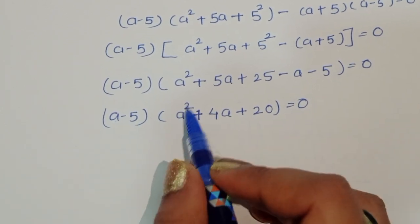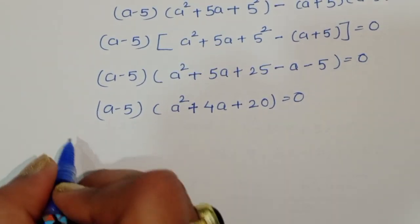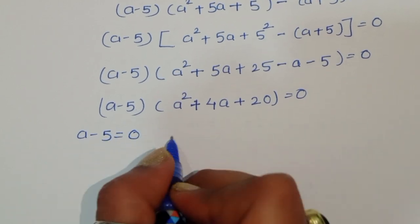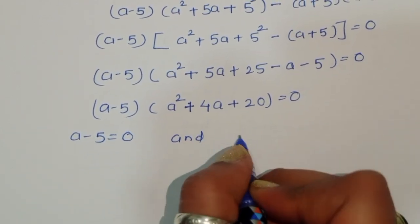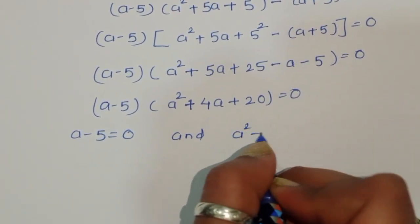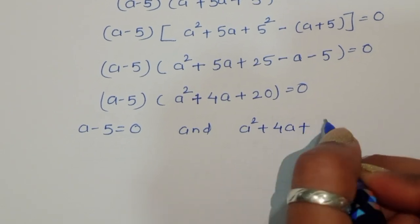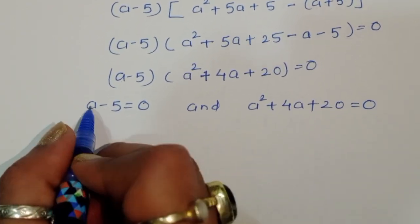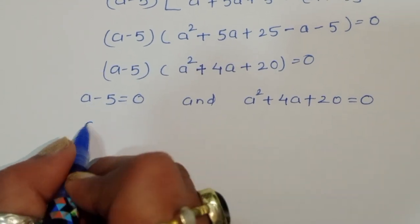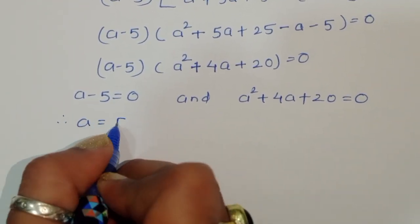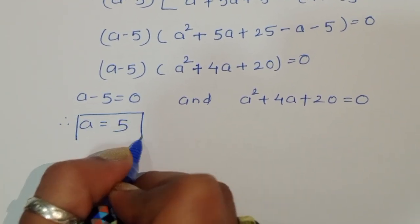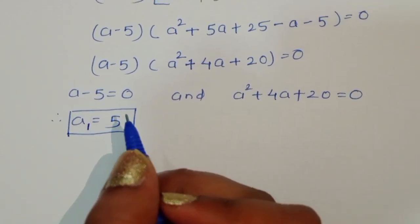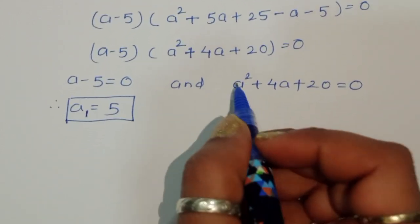We now have two equations: a minus 5 equals 0, and a square plus 4a plus 20 equals 0. From the first equation, a minus 5 equals 0, therefore a equals 5. This is the first value, a₁ equals 5.